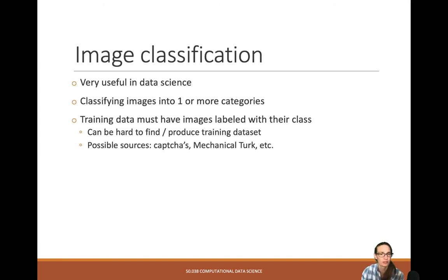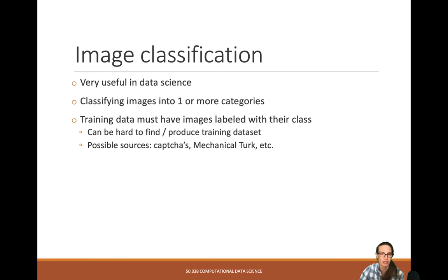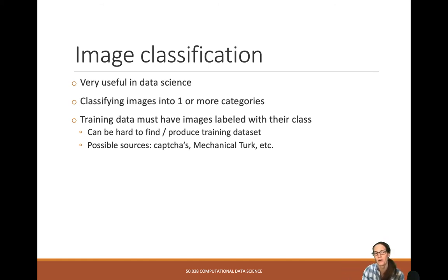Image classification is very useful in data science — it just means classifying images into one or more categories. We can also have multi-label classification, which is a little harder to evaluate because you can't use standard cross-entropy loss. You have to think about how many categories you allow and how you quantify accuracy when an image belongs to two categories but your algorithm predicts a third. There are some other strategies for multi-label classification; we're not going to deal with that right now. Training data must have images labeled with their class.